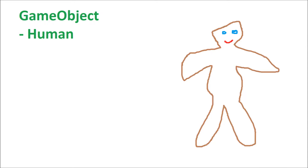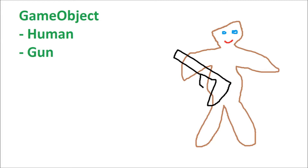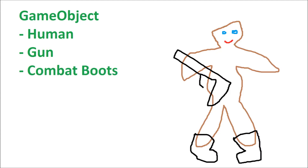Let's look at our human again and see how we might build him up with a component-based design. The first component we will add is a human component — this defines how a human moves and behaves. Then we will add a gun component for a gun, a component for combat boots, and finally a component for the tin hat.